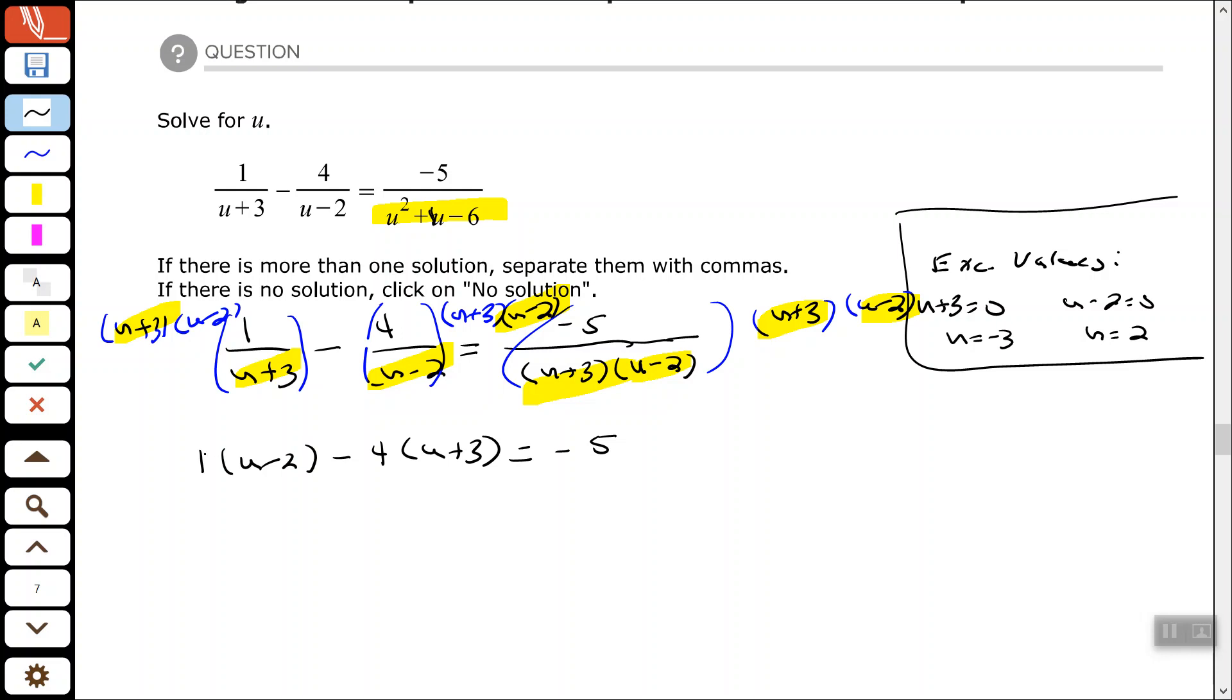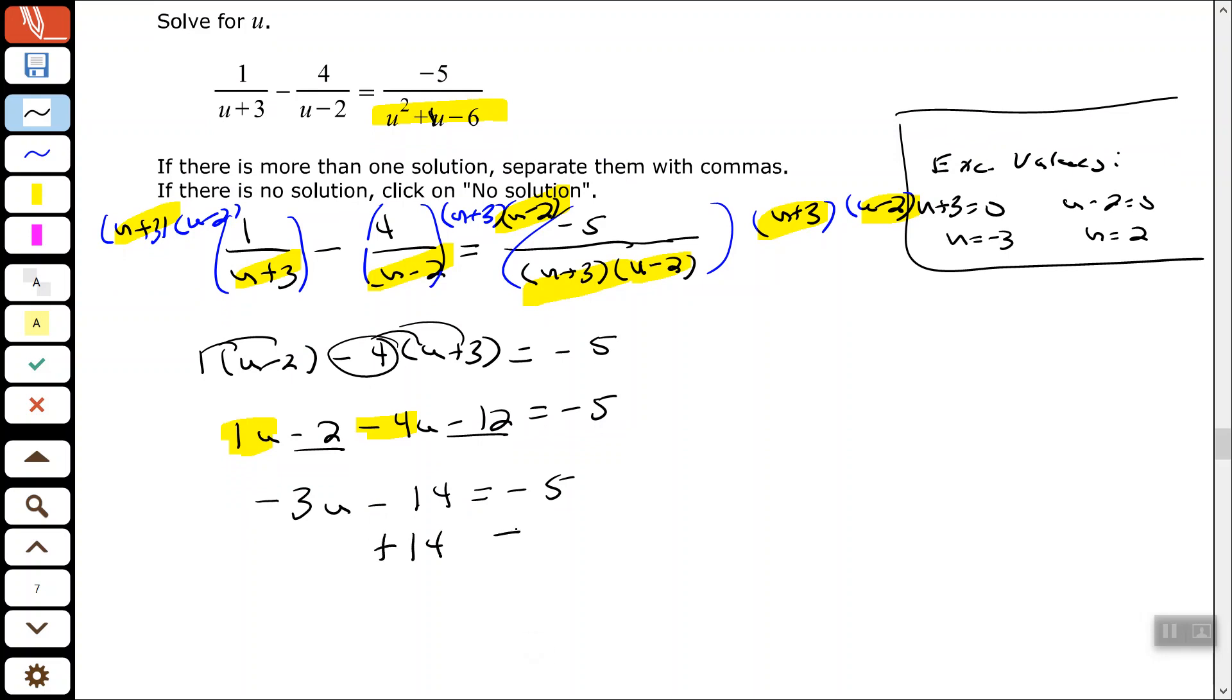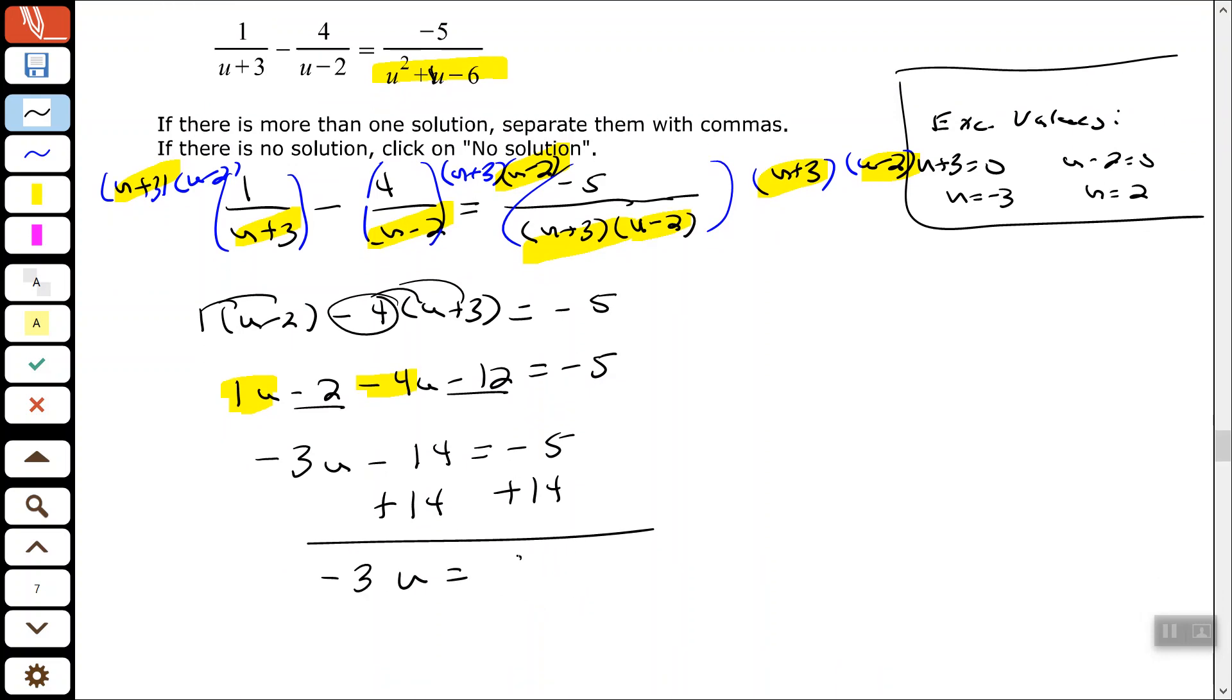Let's clear our parentheses. So 1u minus 2, distribute the negative 4 here. So combine your like terms. On the left-hand side of the equal sign I have positive 1 minus 4 which is negative 3, and then negative 2 minus 12 which is negative 14. Add 14 to both sides. Negative 5 plus 14 is positive 9. And then divide both sides by negative 3. And I get u equals negative 3.